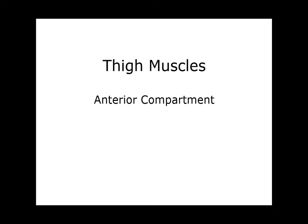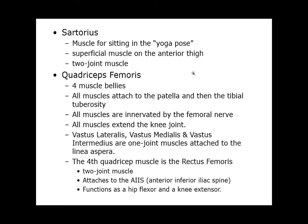A few details about the muscles that create knee extension. The quadricep muscle group is considered the anterior compartment of the thigh. The sartorius is also in there with them, but we'll focus on the quadricep muscle group. So you have four muscle bellies. They all attach to the patella and then the tibial tuberosity, so they share that attachment point. All of them are innervated by the femoral nerve and all extend the knee. The vastus lateralis, medialis, and intermedius are one-joint muscles and they all attach to the linea aspera on the posterior side of the femur.